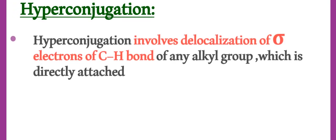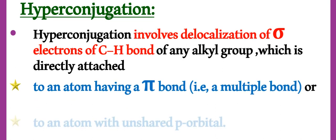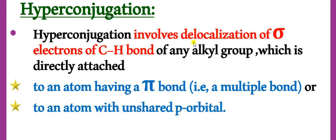What is hyperconjugation? Hyperconjugation involves the delocalization of sigma electrons of a carbon-hydrogen bond of an alkyl group, which is directly attached to an atom having a pi bond — like in alkenes — or to an atom with an unshared orbital. So essentially, sigma electron delocalization occurs with the pi bond.